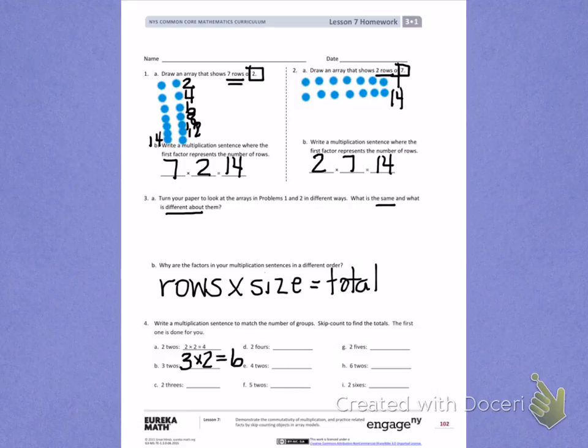Letter C. I have two 3's or two groups of 3. So I'll start with my two groups times 3. Again, I can skip count by 2 three times. 2, 4, 6. B and C represent the commutative property.